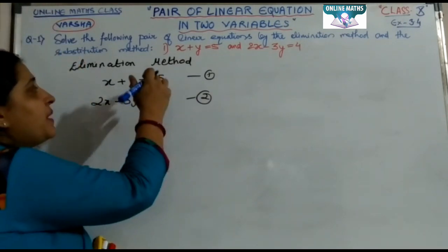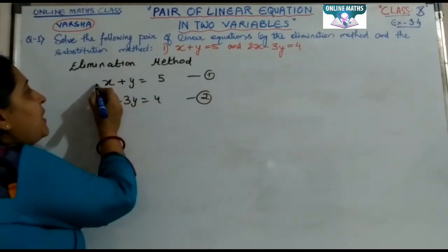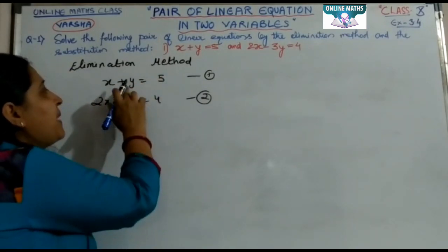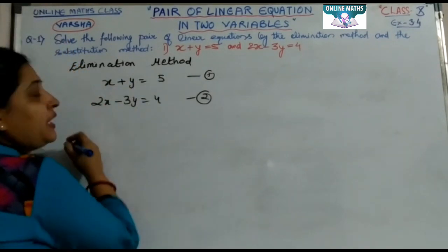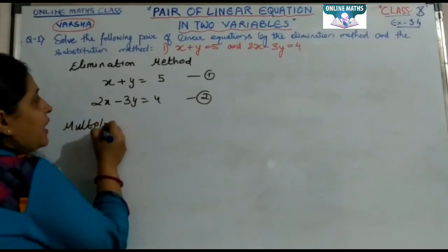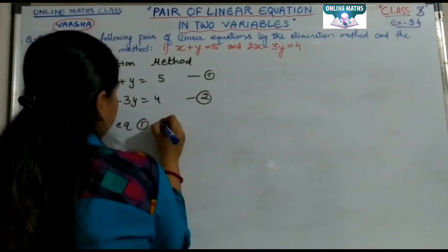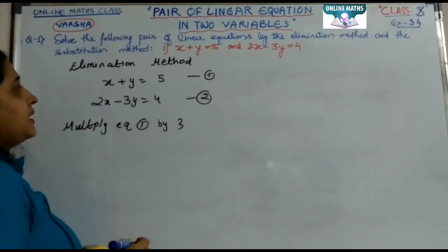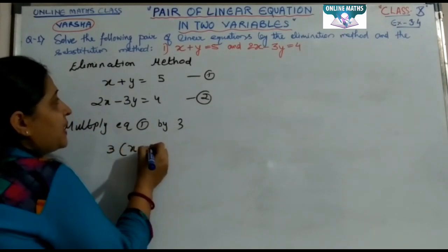We need to make the coefficients of x or y equal. If we multiply equation number 1 by 3, then we get 3x plus 3y equals 15. Multiply the whole equation — not just x or y, but the constant term also. So multiplying equation one by 3 gives us 3x plus 3y equals 15.